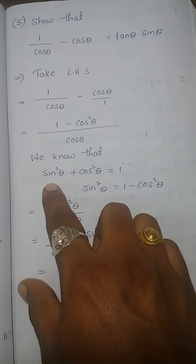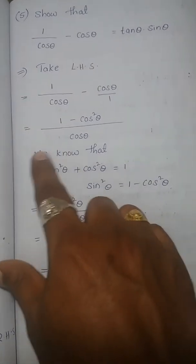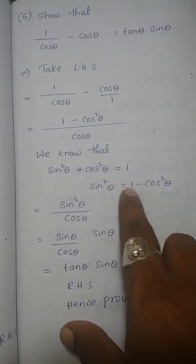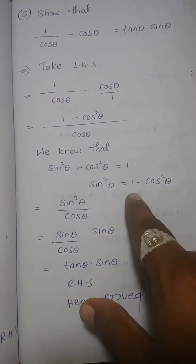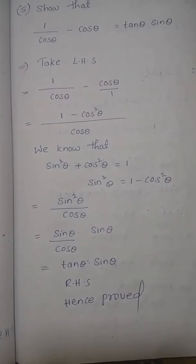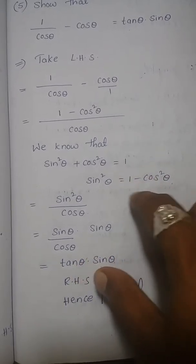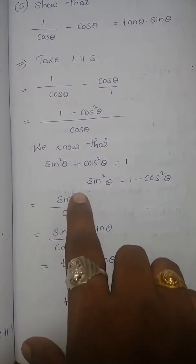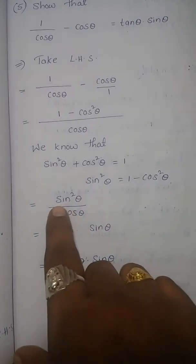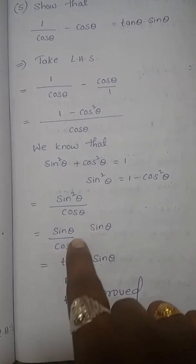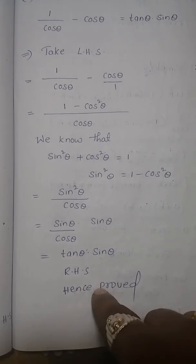We know sin²θ + cos²θ = 1, so sin²θ = 1 − cos²θ. Replace 1 − cos²θ with sin²θ. Since sin²θ = sinθ · sinθ, we write sinθ/cosθ × sinθ, which equals tanθ · sinθ. Hence proved.